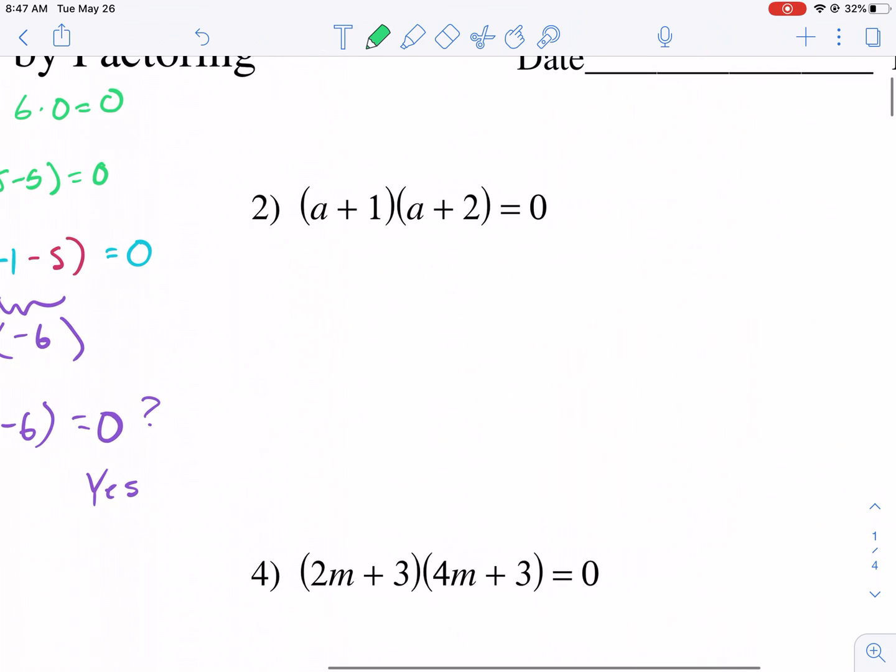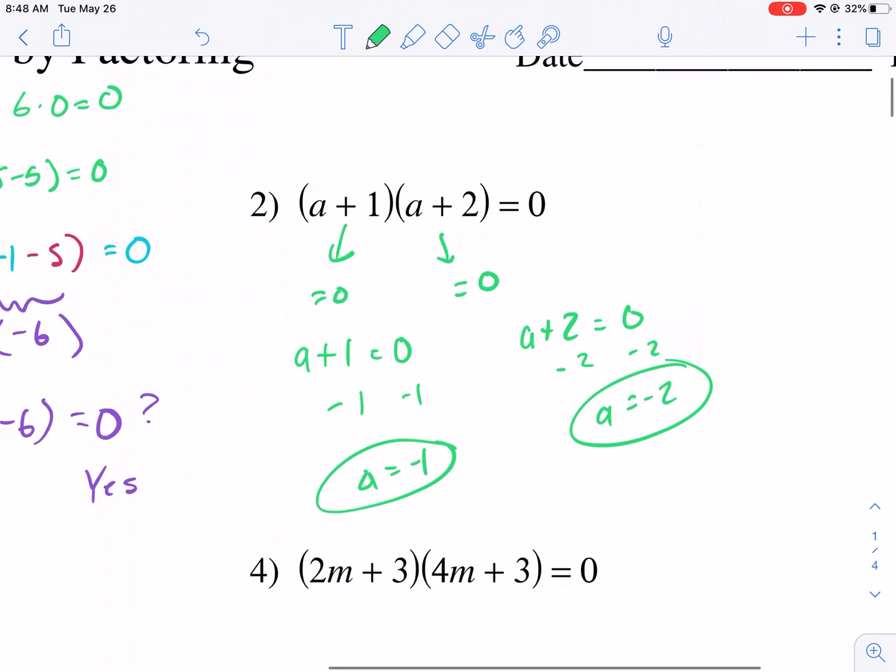Let me go ahead and show you with this one. So if we have this equals 0 and that equals 0, we know it makes a true statement. So all we need to do is set both of these equal to 0 and then solve for A. So here we get minus 1, A equals negative 1, minus 2, A equals negative 2. We have two answers, and that's all there is to it.